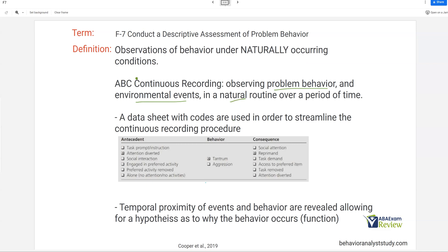And what you'll typically do with continuous recording and what separates it from narrative recording is you'll have a pre-made data sheet. So, if you look at this one from Cooper, they have pre-made antecedents, pre-made consequences, and pre-made behaviors. So, as your technician or as you're observing, all you need to do is check the boxes on what is happening given that data point.